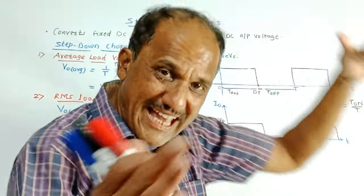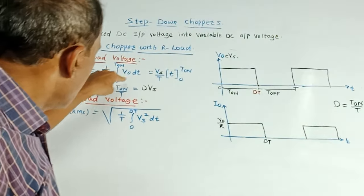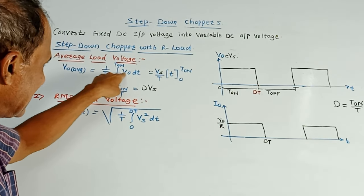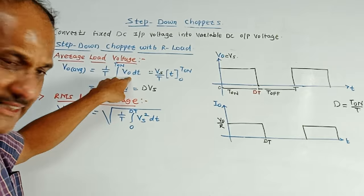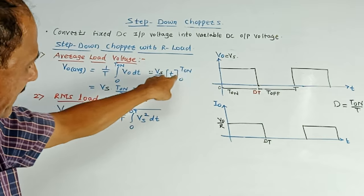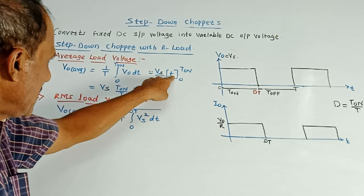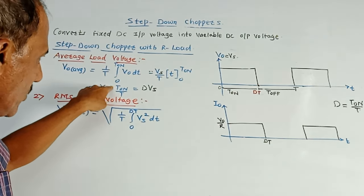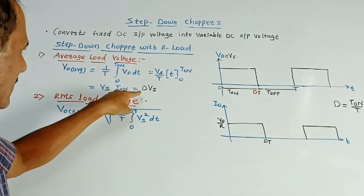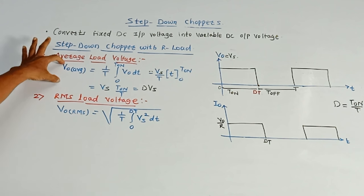So at the output, we are getting Vs. Vs is the voltage applied at the input side. So in place of V0, I have put Vs upon T. This T is as it is. This can be taken outside the integration. Integration of DT is T. Limits are 0 to T on. So put upper limit minus lower limit. So it becomes Vs as it is. This becomes T on, T on upon T. But T on upon T, this value is called duty cycle. So it is D into Vs. This is the formula for average output voltage.